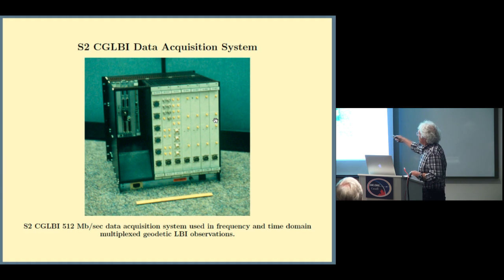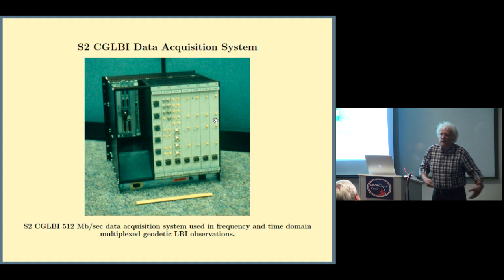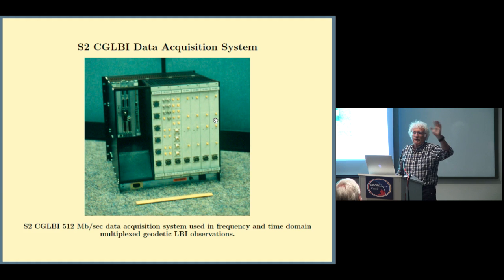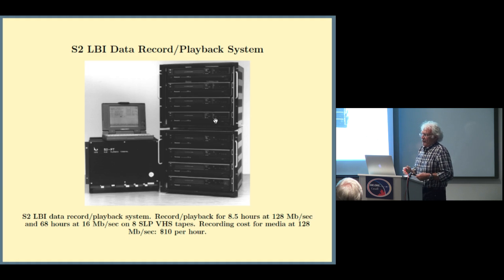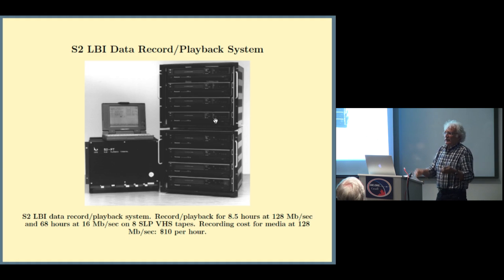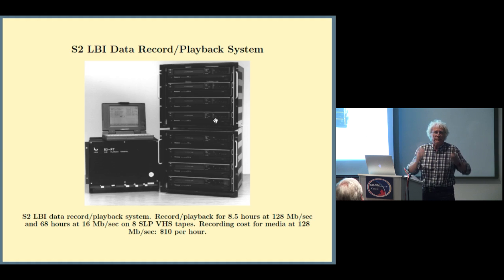This is the data acquisition system, 512 megabits per second. The nice thing, you could pick it up, put it on your arm, carry it out the door, and put it in the backseat of a car. You could do none of this with the Mark III. It was a six-foot rack with tons of stuff in it. This is the data record playback system. The capabilities of the playback system were a superset of the capabilities of the record system. You could actually take it from your correlator, put it in the backseat of your car. The Australians actually did cannibalize the correlator when they needed another record system in the field. It recorded at 128 megabits per second rate, eight and a half hours. The recording rate was $10 an hour.